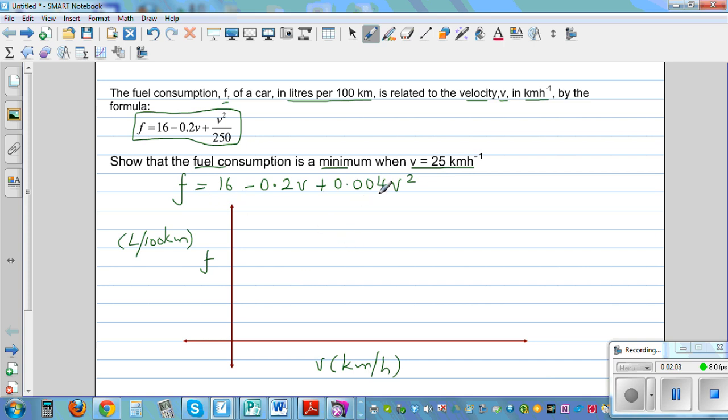So by just looking at this function, I can say this is a parabola, this is a quadratic. So the graph would look somewhat like this. It's not drawn to scale. It would go somewhat like this. So this is 16. How do I know this is 16? Because when V is 0, if you put V as 0, this is going to be 16. And your fuel consumption cannot be below 0.